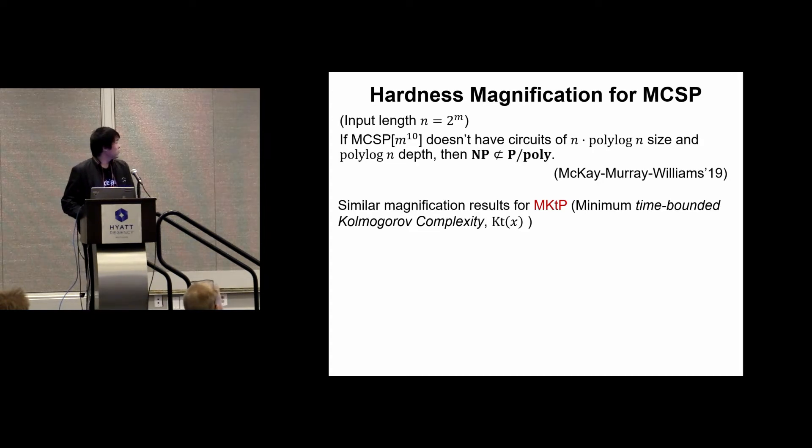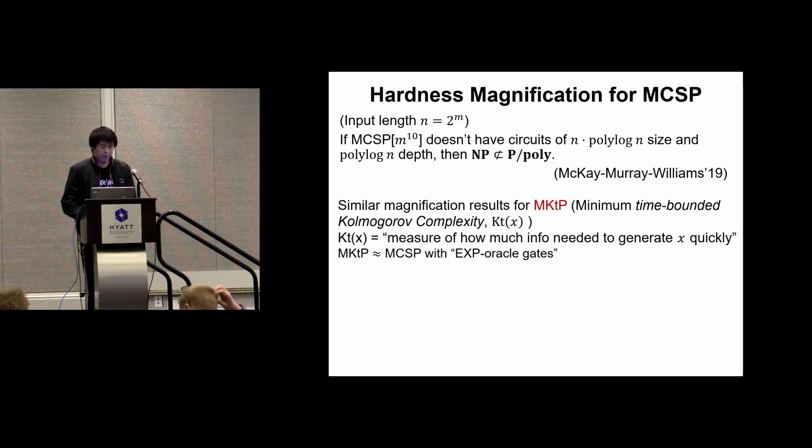There are also similar magnification results for a different language, the MKTP, which is also a compression problem, though it uses a different complexity measure instead of circuit size. We're not going to define it here, but roughly speaking, the measure is like how much information is needed to generate the string quickly. We could also view MKTP as a version of MCSP with export oracle gates.